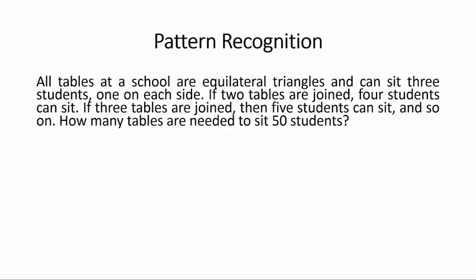Let us look at a very simple example. All tables at a school are equilateral triangles and can sit three students, one on each side. If two tables are joined, four students can sit. If three tables are joined, then five students can sit, and so on. How many tables are needed to sit 50 students?